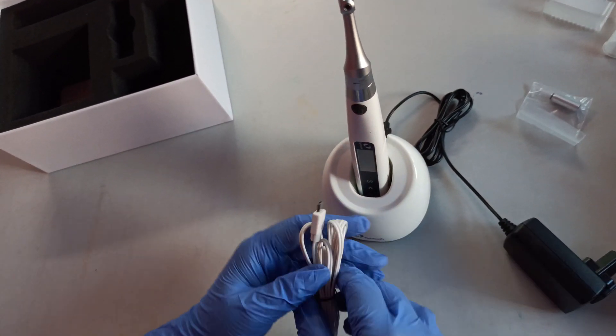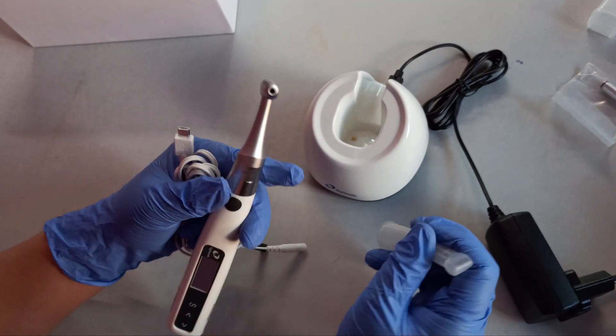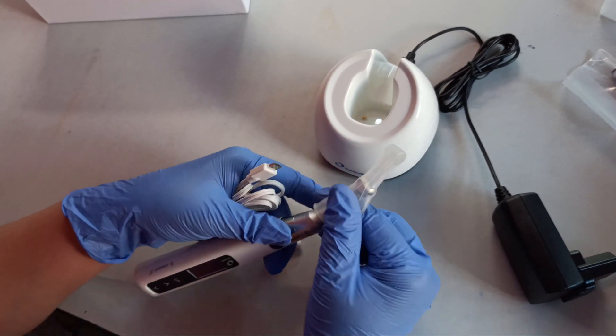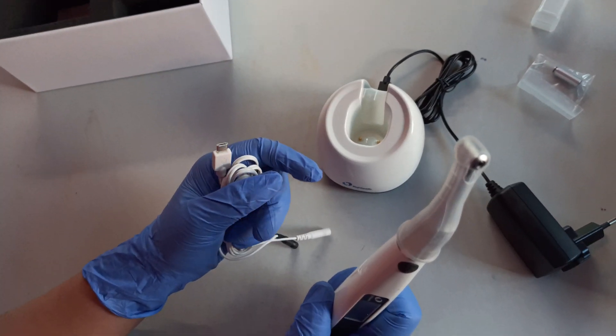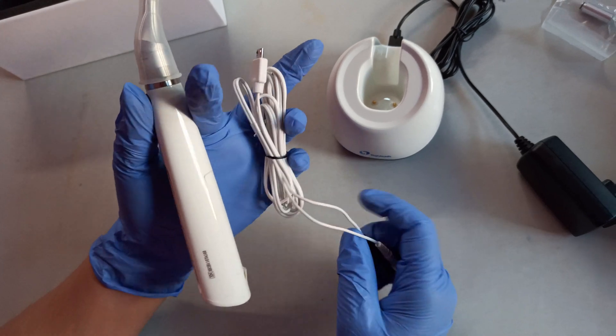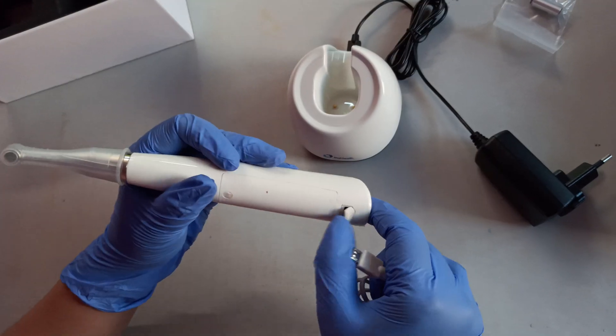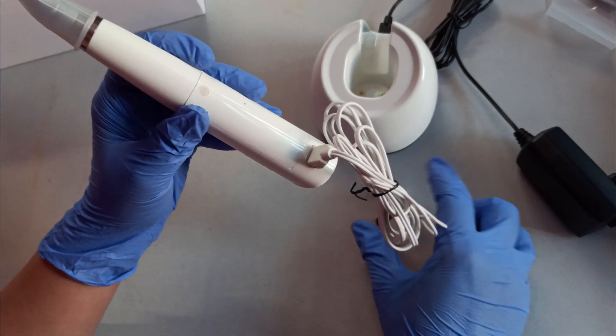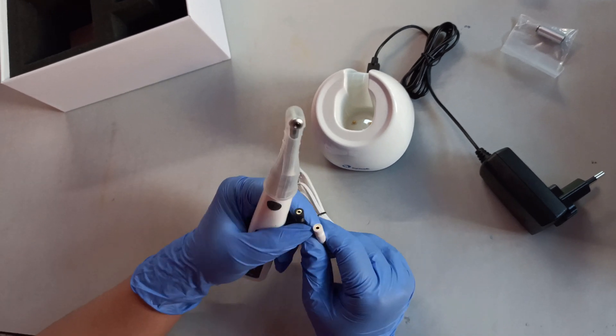For the Apex Locator, please always remember that you always need to insulate the handpiece with an insulating sleeve. Otherwise you won't get proper readings. Now this socket will go into the endomotor, and then you can attach the file clips and the lip hooks.